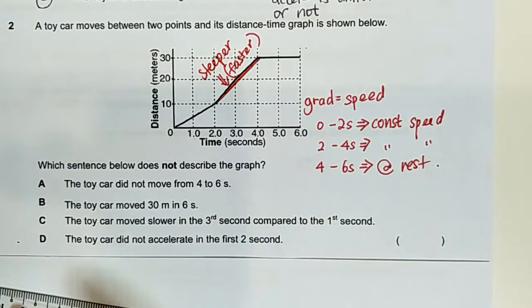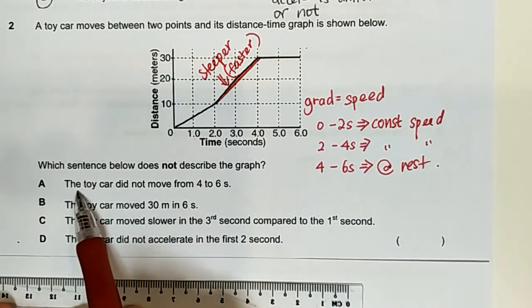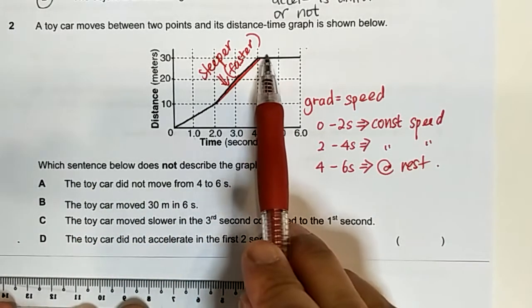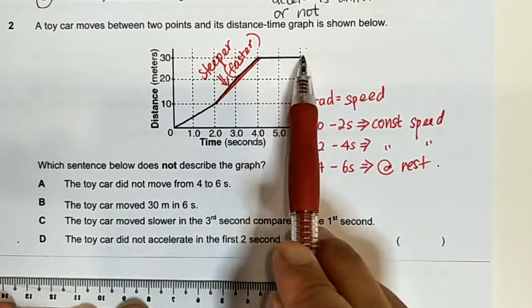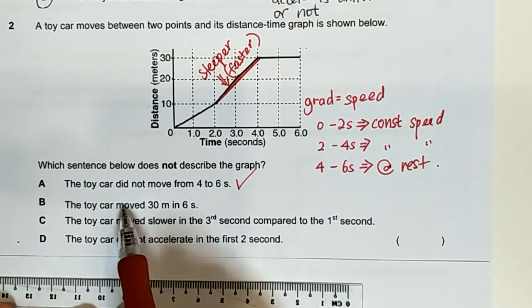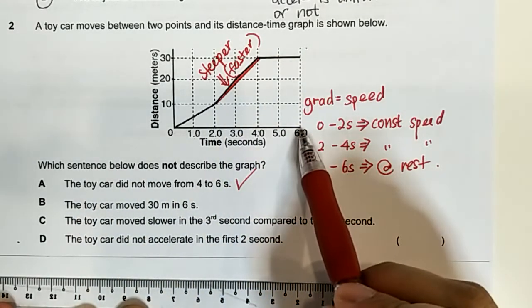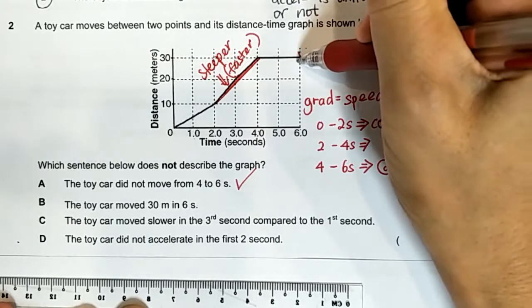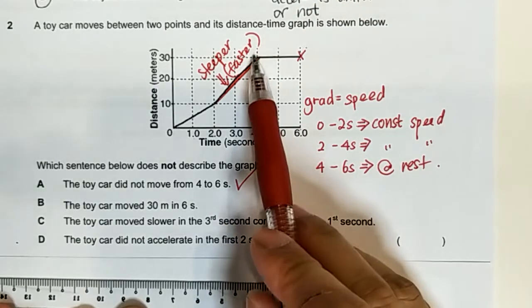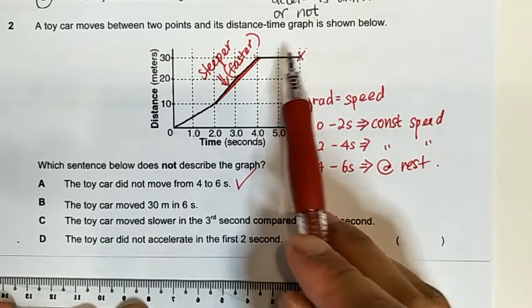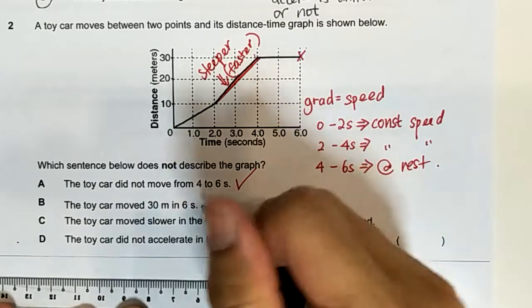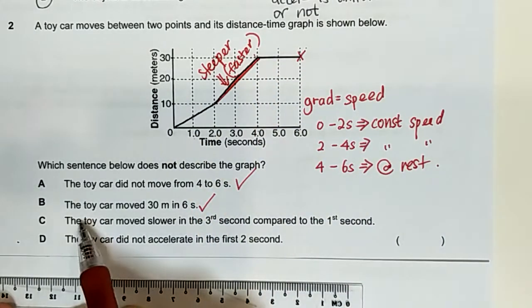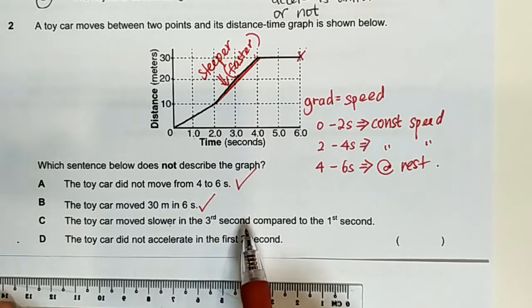So which one does not describe the graph? The car did not move from 4 to 6 which is true because the distance didn't change, so this is true. The car moved 30 meters in 6 seconds, so you see 6 seconds is here if I look up it traveled 30 meters although it has reached in 4 seconds, 5 seconds, 6 seconds is all 30 meters, so yes.